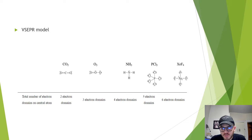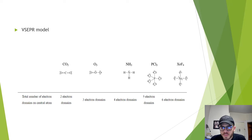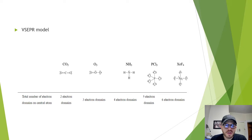Ammonia has three single bonds and one lone pair on the central atom, so it has four electron domains. Phosphorus pentachloride has five single bonds on the central atom, which is phosphorus. Xenon tetrafluoride has four single bonds and two lone pairs on the central atom, giving a total of six electron domains. The VSEPR model predicts that because these electron domains repel one another, they will arrange themselves to be as far apart as possible, thus minimizing the repulsive interaction between them.